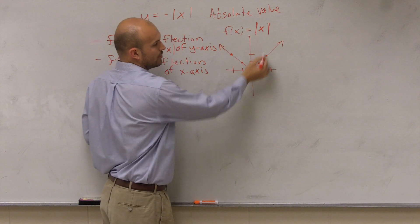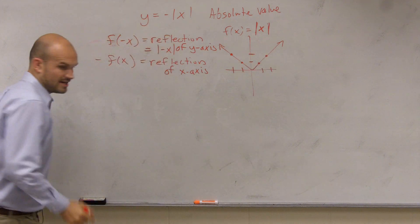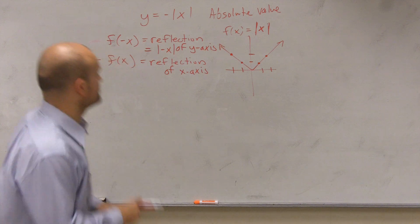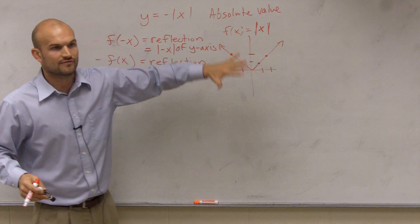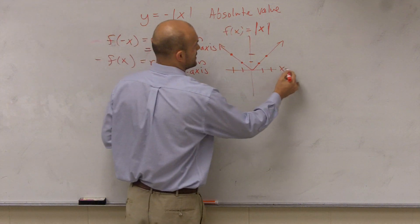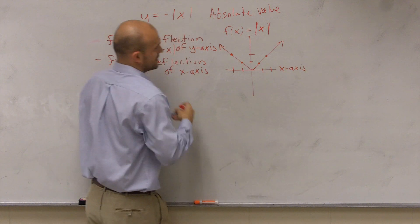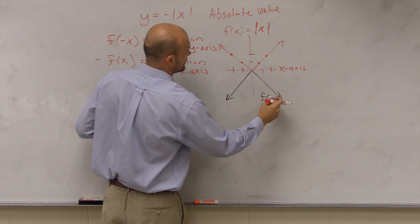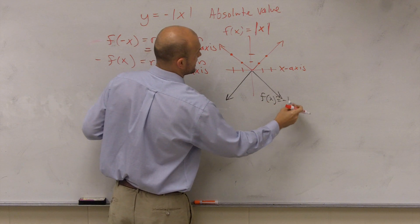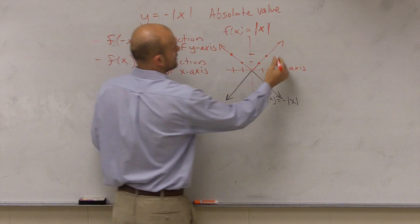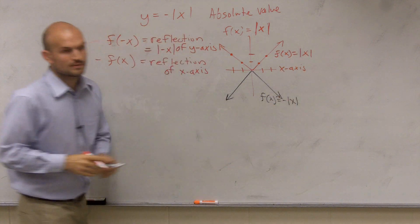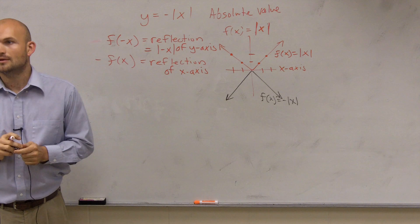First thing you guys need to know is the parent graph has a slope of up 1 over 1. So you need to understand that it goes up 1 over 1. And then if I was going to graph now the reflection, all it simply is, is this graph reflected over the x-axis, which is right here. So now, that is f(x) equals negative absolute value of x, and this is f(x) equals absolute value of x. Make sense?